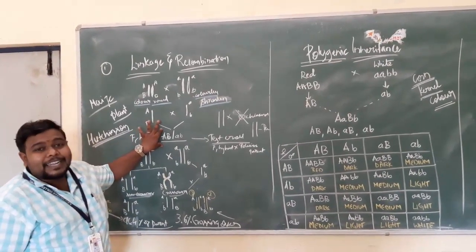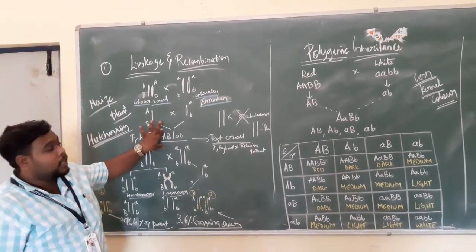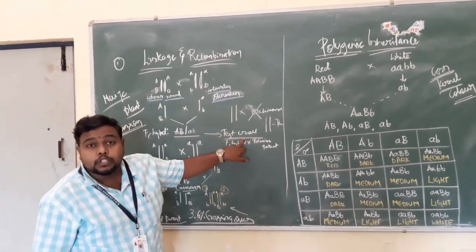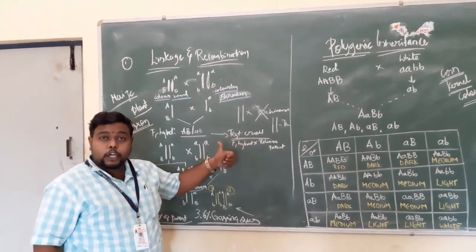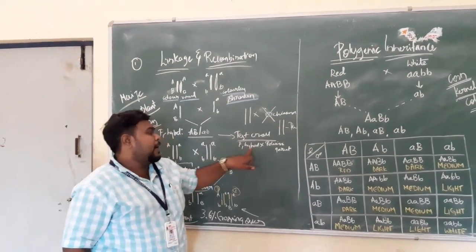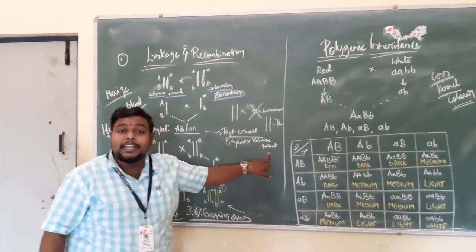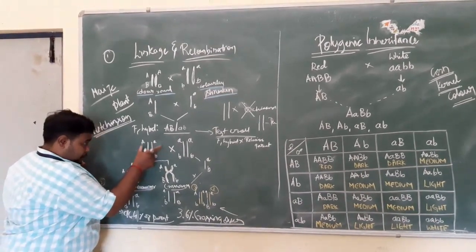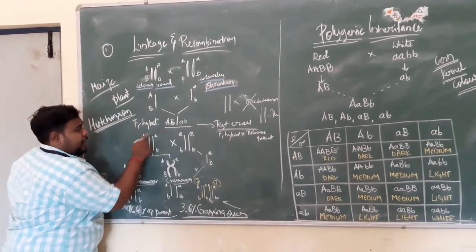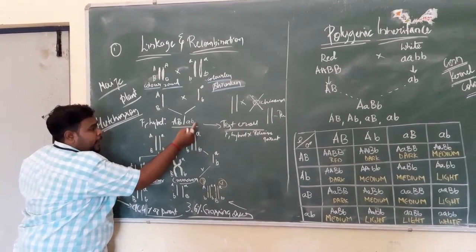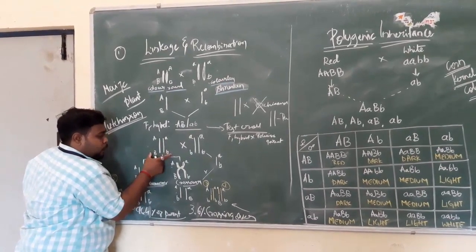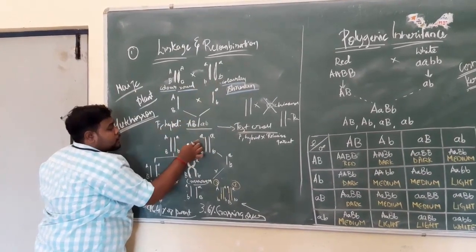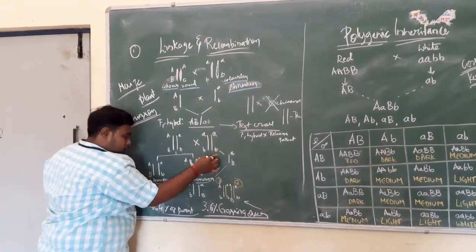This F1 hybrid was then subjected to a test cross. So what is a test cross? A cross made between the F1 hybrid with that of the recessive variant can be called a test cross. Here the F1 hybrid, capital A, capital B, small a, small b, is crossed with the recessive variant having small a, small b, small a, small b.